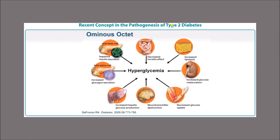Regarding the pathogenesis of type 2 diabetes: there can be impaired insulin secretion from islet beta cells in the pancreas, or increased glucagon secretion from islet alpha cells. Increased glucagon secretion or decreased insulin secretion leads to increased blood sugar. There can also be increased lipolysis, increased glucose reabsorption in the kidney, decreased glucose uptake by muscle — leaving more glucose in the circulatory system — neurotransmitter dysfunction, and increased hepatic glucose production.